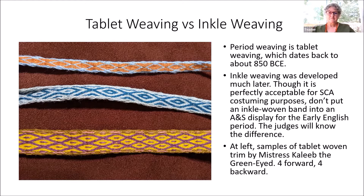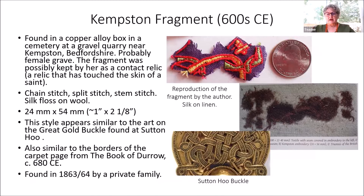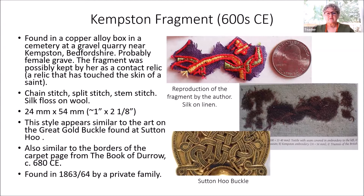The Kempston fragment is one of the fragments I reproduced because the actual fabric and embroidery is really hard to discern on a big screen. The Kempston fabric was found in the 600s, in a copper alloy box in a cemetery at a gravel quarry. It was probably a female grave. The fragment was possibly kept by her as a contact relic — meaning it's a relic that has touched the skin of a saint. I don't know why the archaeologist decided it was a relic rather than a piece of her own garment; it's not described anywhere in text that I can find.